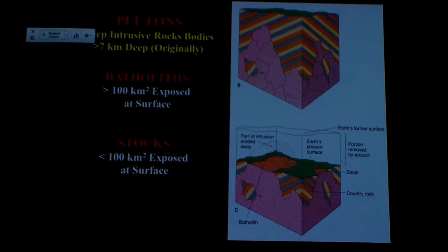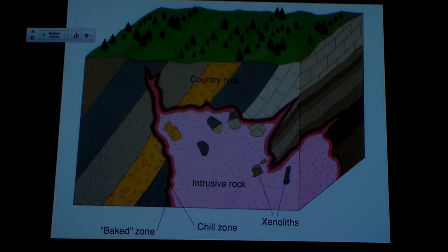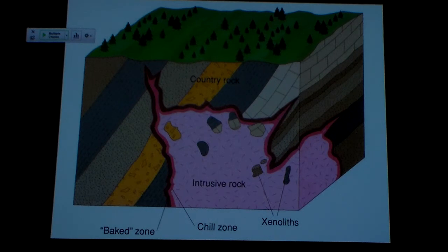Instead of saying 'a big coarse-grained magmatic body greater than 100 square kilometers,' I can just say batholith. Terminology is a shorthand. Now, with this hot magma intruding into surrounding rock, a couple of things are going to happen. That surrounding rock is going to start melting — it's being contacted by very hot magma.